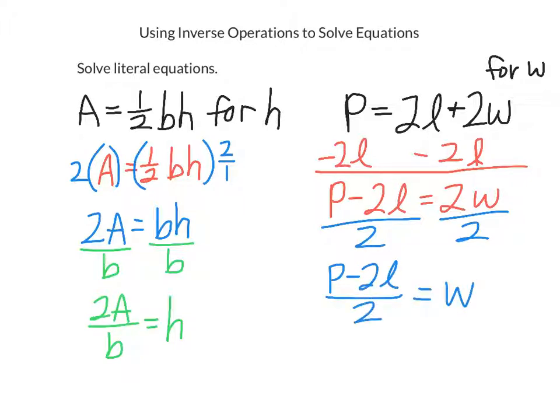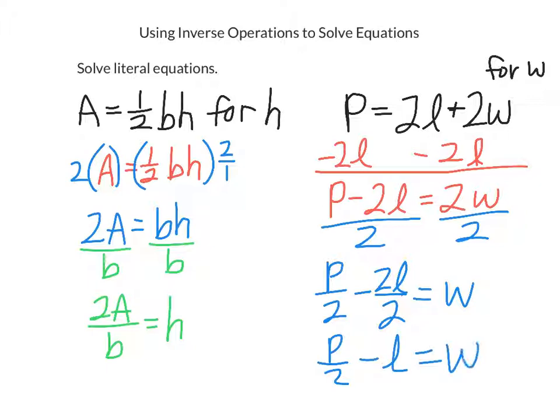And I could just leave it as P minus 2L all divided by 2 equals W. But I see that I could simplify that if I split it up. And what I mean by that is I divide each term by 2. So P divided by 2 minus 2L divided by 2. And so simplified I can either write P halves or P divided by 2 minus L equals W. Or some people even like to, because we don't like to see division in a formula if we don't have to, P divided by 2 is the same as 1 half P. So 1 half of the perimeter minus the length equals the width.